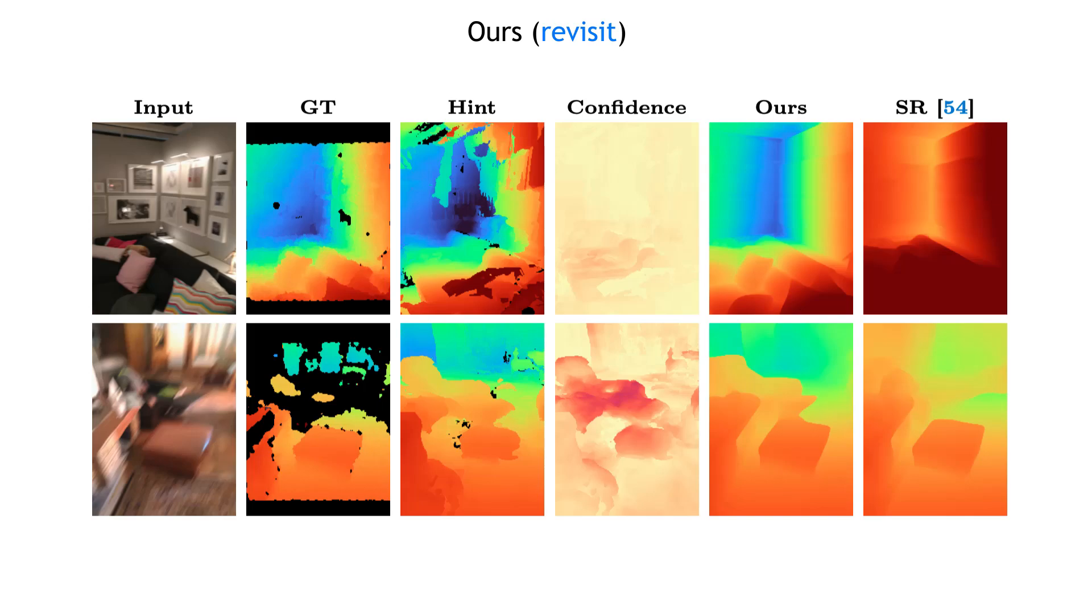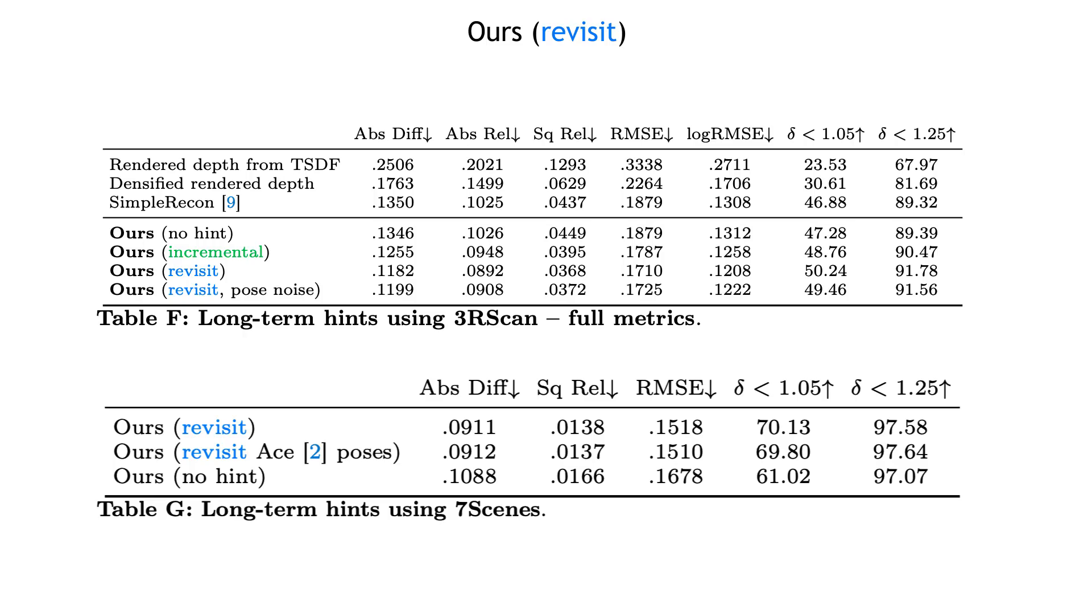Our model can also be used in cases where a mesh is available from a previous visit to a location. We show that our model is robust to scene changes, relocalization errors, and pose noise, outperforming the baseline.